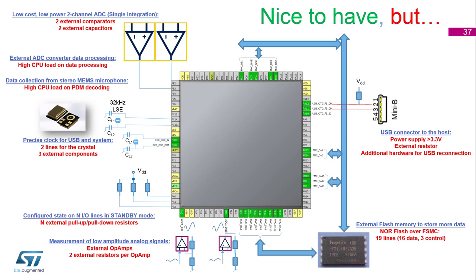USB is provided for transfer of the processed data to the host system. The need to signal USB reconnection requires an external resistor and additional hardware on the data plus line. The actuator power stage connected to this microcontroller needs external pull-up to define proper levels when the device is in low power mode to prevent any disastrous events.